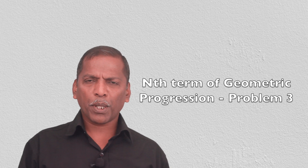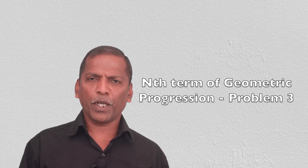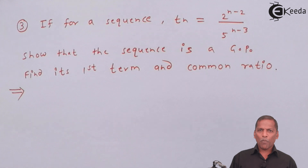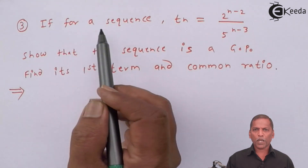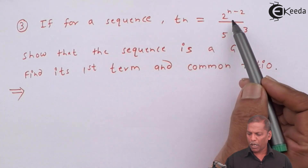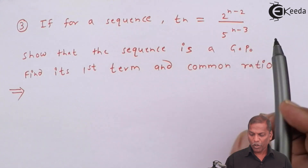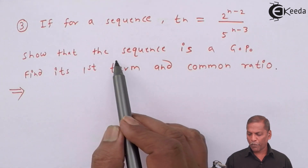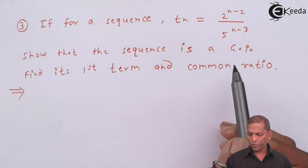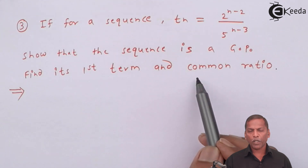Hello friends, now we see problem number 3, which is based on the nth term of GP of the chapter sequence and series. The problem is: if for a sequence T_n is equal to 2 raised to (n minus 2) upon 5 raised to (n minus 3), show that the sequence is a GP, and find its first term and common ratio.